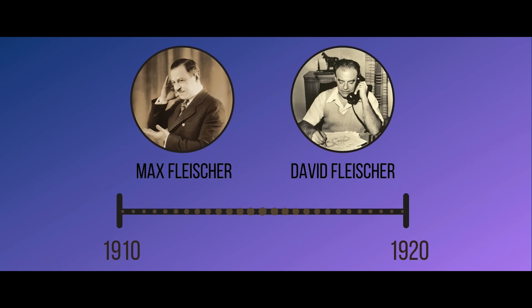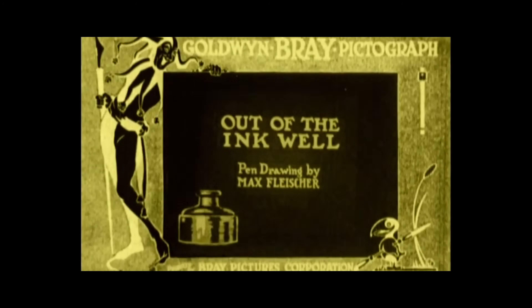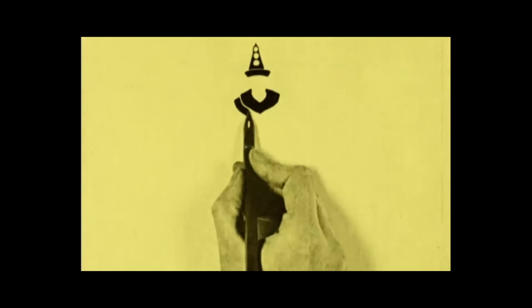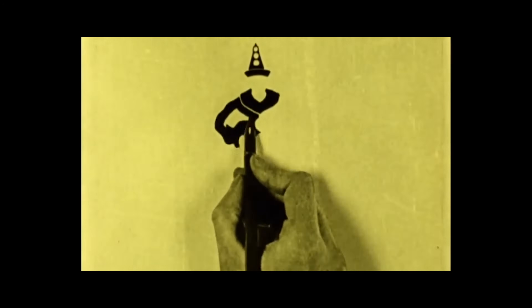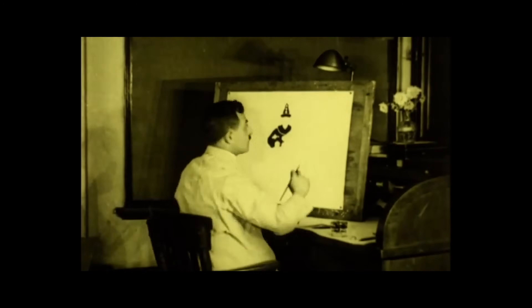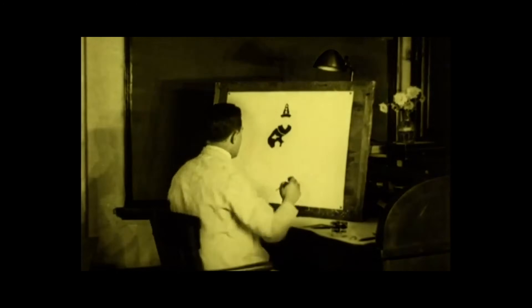An animator named Max Fleischer came up with a technique called rotoscoping, which he used in his animated series 'Out of the Inkwell.' His brother David would dress up as a clown for the role of Coco the Clown and act normally in front of the camera. Max would then use the footage as a reference to draw over frame by frame, tracking human movements and translating them to the animated character.